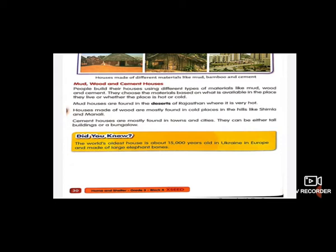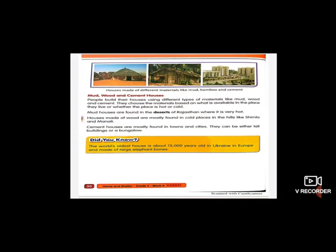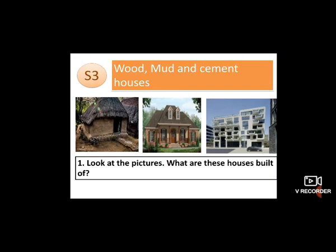Now let's look at volume sheet number 3 on page 26, about wood, mud, and cement houses. The first question asks: look at the pictures — what are these houses built of? We have already learned that the first house is made of mud, the second of wood, and the third of cement.